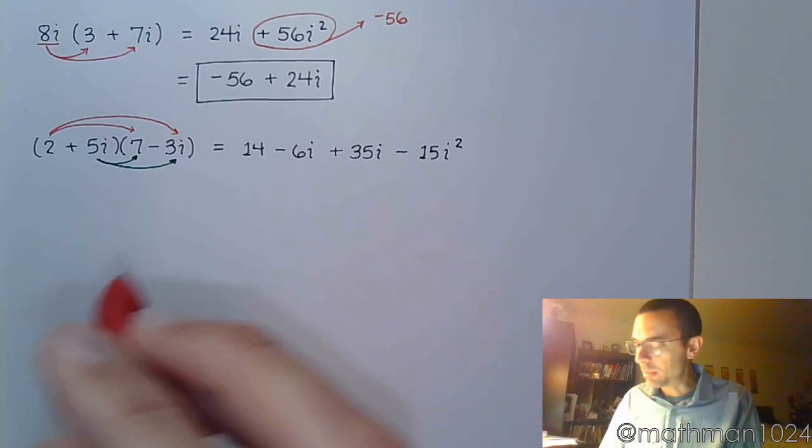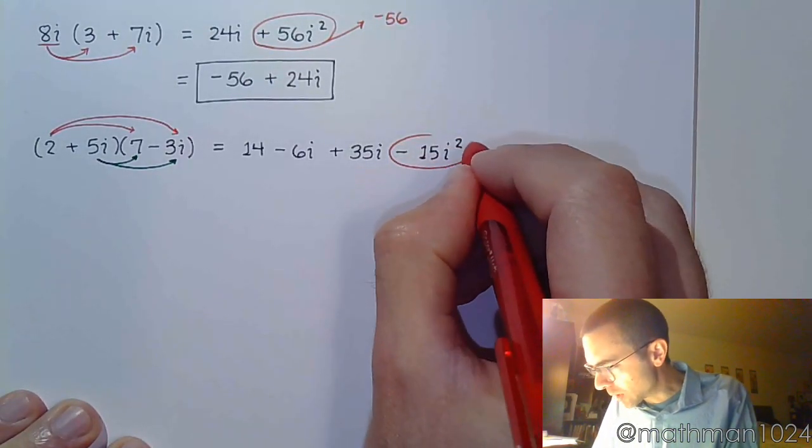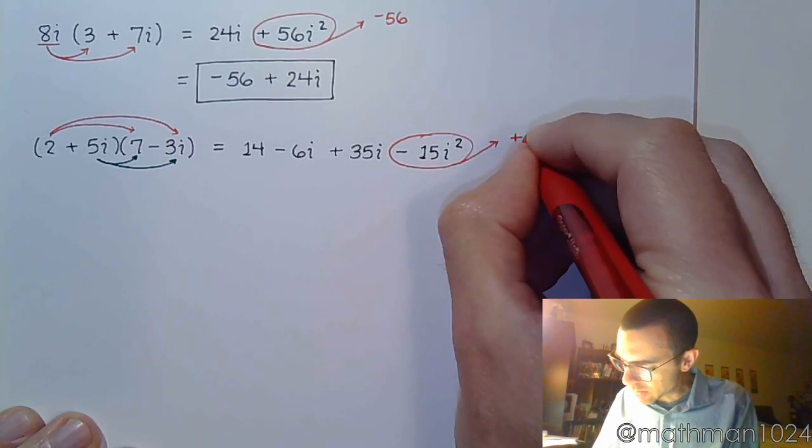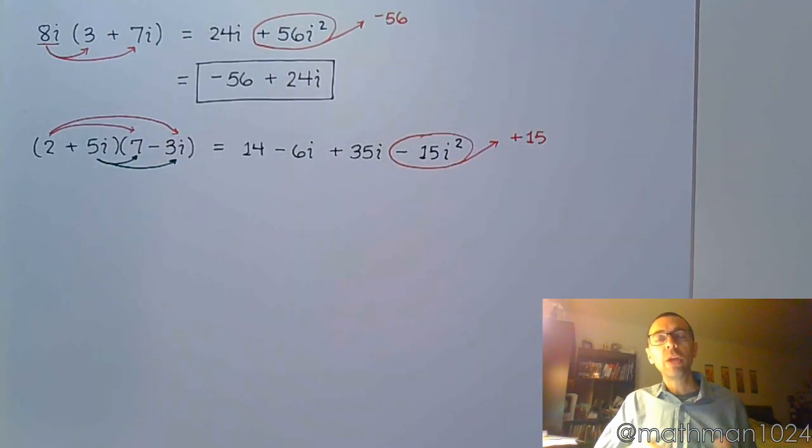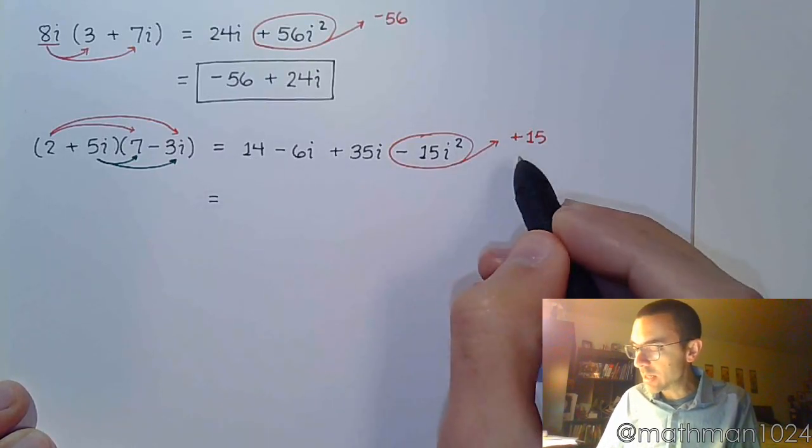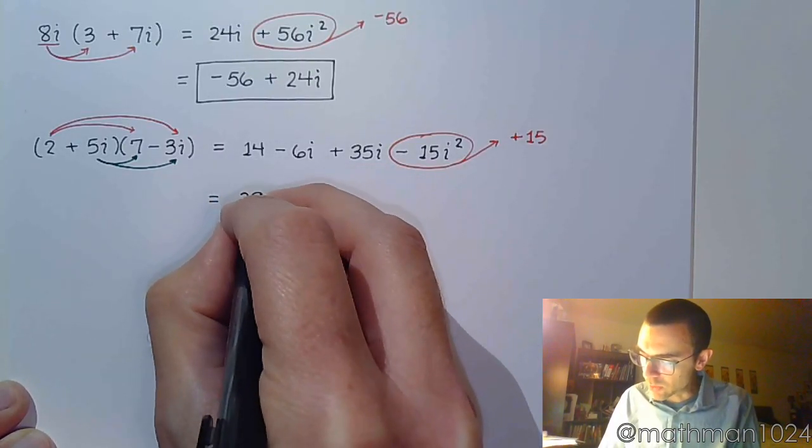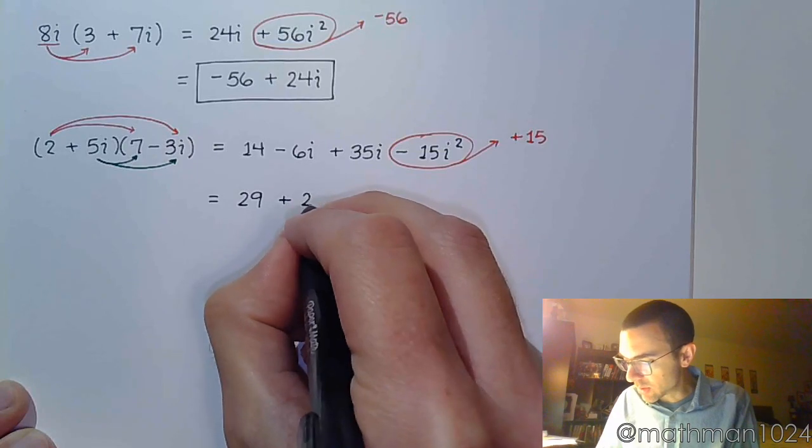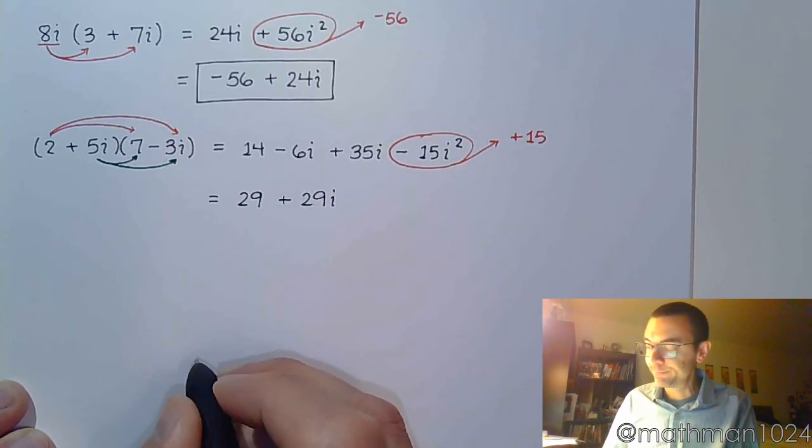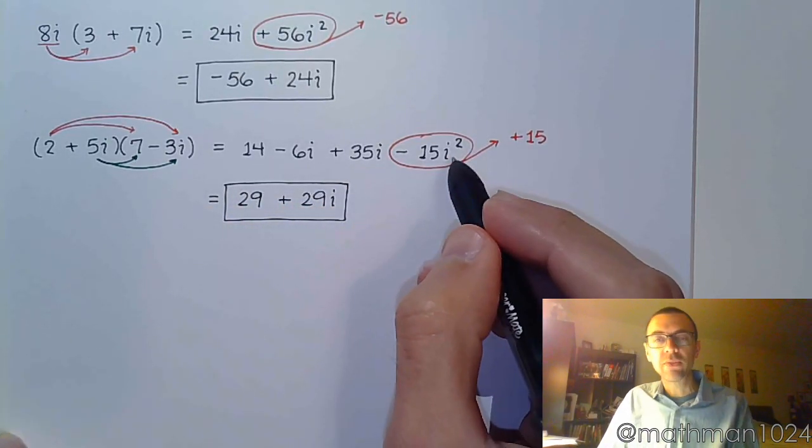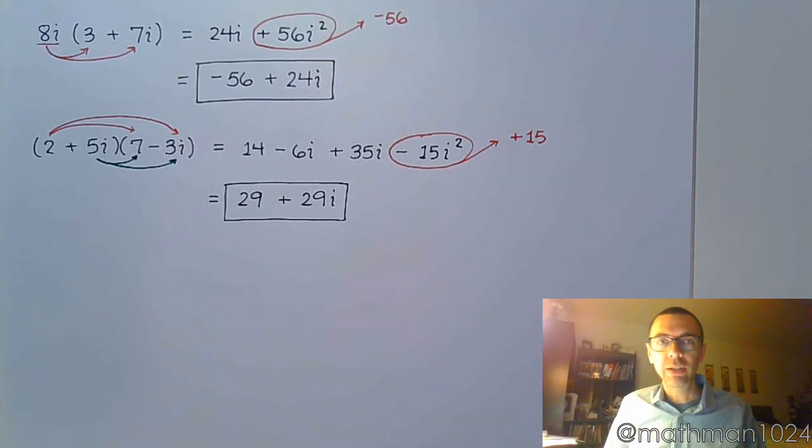And just like I did in the example above, I'm going to circle the piece that has i squared, and I'm going to say what it becomes. So minus 15i squared becomes positive 15, and there's no i because the i squared is completely consumed to give you a negative 1 factor. And so now we combine like terms, real first. So 14 plus 15 is 29 minus 6i plus 35i gives me plus 29i. So you foil, you take care of any i squared that pop up, and then you combine like terms.